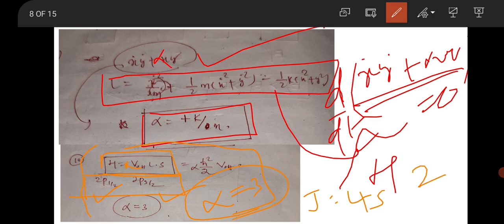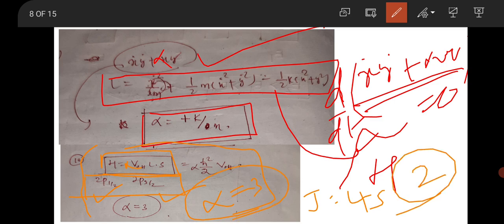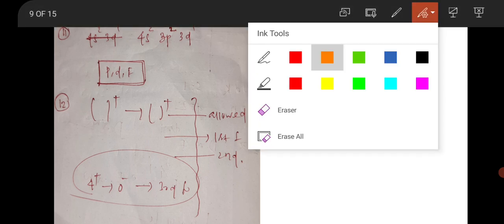Then there was an LS coupling term symbol question. The configuration was 4s² 3p² 3d¹ — this is very easy. The term symbol will be written in terms of the quantum numbers. This will be the correct answer to the question.